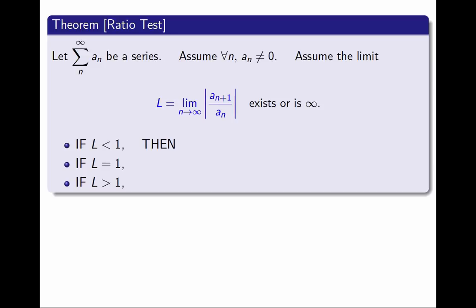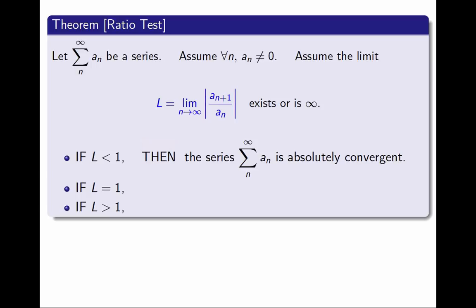First, what can I conclude if the limit is smaller than 1? Let's look at what the limit means. I'm calculating the quotient of one term divided by the previous one in absolute value. If this limit is smaller than 1, it tells me that in absolute value, the terms of the series are getting smaller, and they're getting smaller quick, so I expect they will be converging to zero and actually converging to zero quickly. And in that case, the theorem concludes that the series is absolutely convergent.